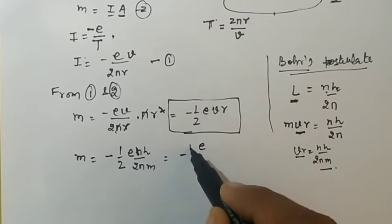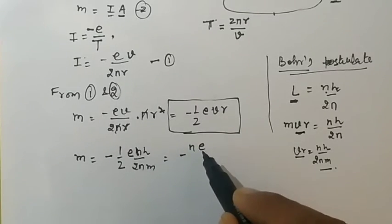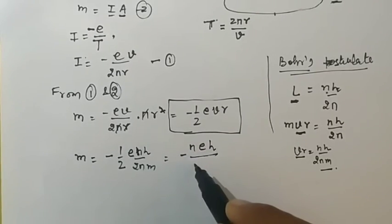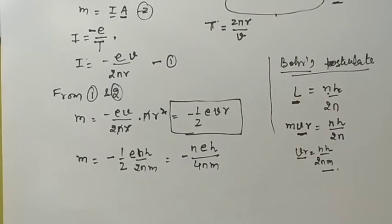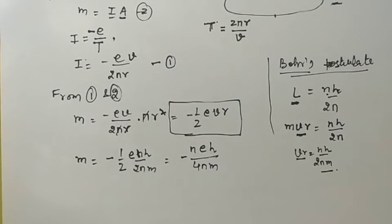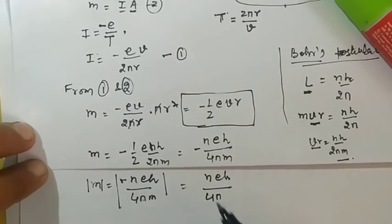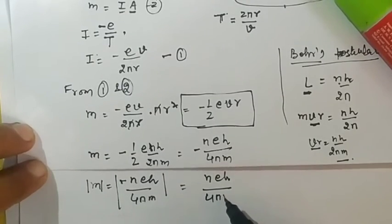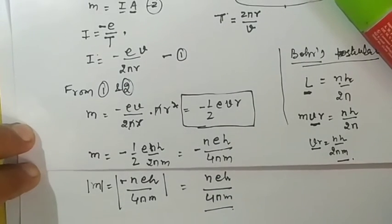Solving a little bit, it becomes enh/4πm. This is your magnetic dipole moment of an electron. Taking the mod, it becomes positive.